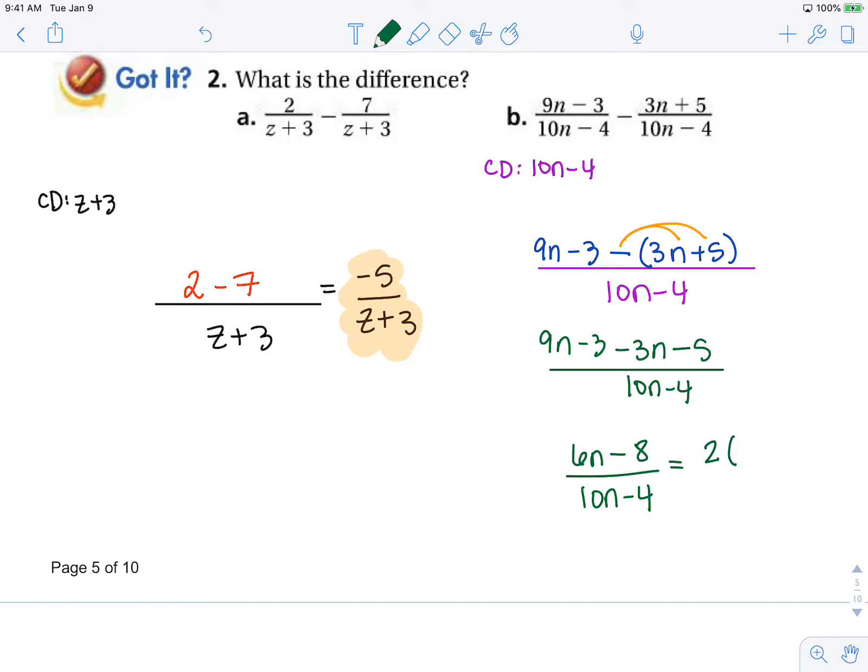That leaves 3n minus 4. The denominator also has a common factor of 2, and that leaves 5n minus 2. These common factors cancel, so our final answer is 3n minus 4 over 5n minus 2. So sometimes after we add or subtract, we then simplify our ending rational expression.